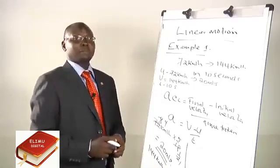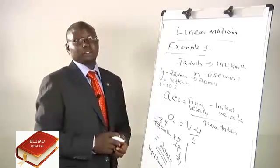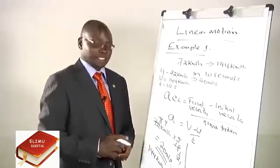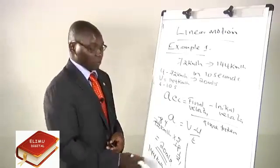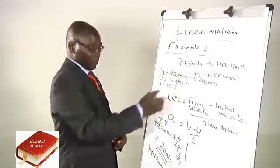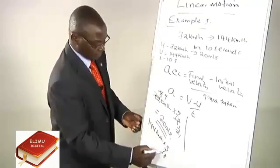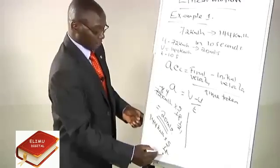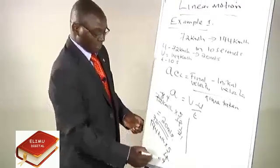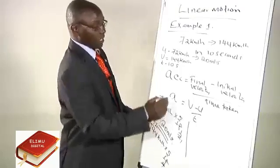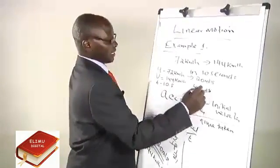We multiply 144 by 5 over 18, just like what we did for the first one. Simplifying, we confirm we get 40 meters per second.